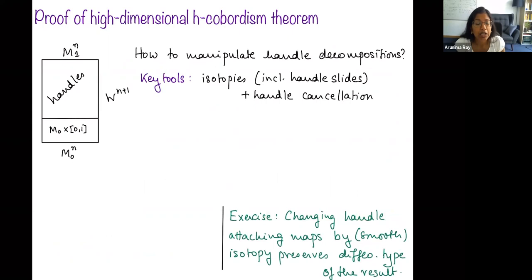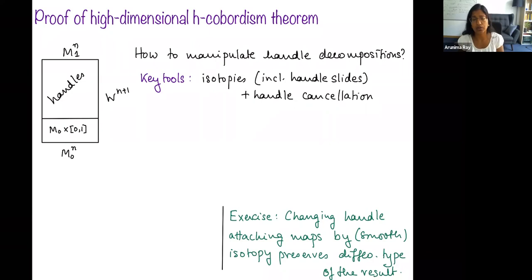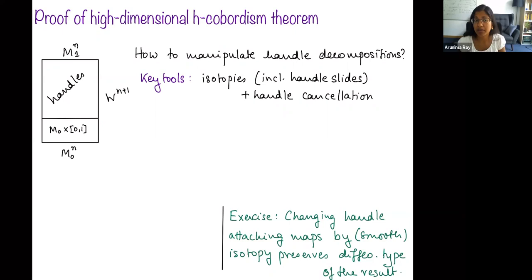What are the tools we have to manipulate handle decompositions? There are two things we can do. One is isotopies of attaching regions of handles, which includes handle slides where you go over handles that have already been attached. The other is handle cancellation. Changing handle attaching maps by smooth isotopy preserves the diffeomorphism type of the result — a nice exercise to work out.